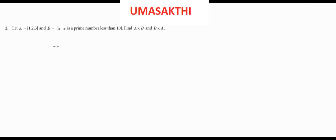Hello students. In the set of numbers, let A equal {1, 2, 3} and B equal {x | x is a prime number less than 10}. Find A cross B and B cross A.